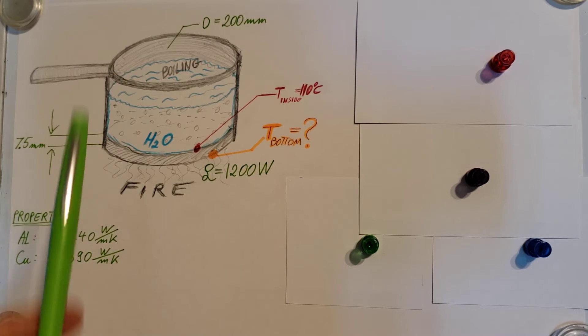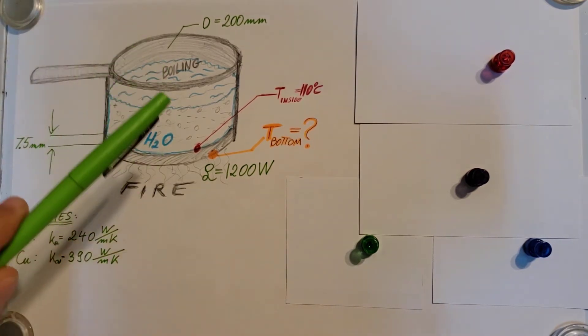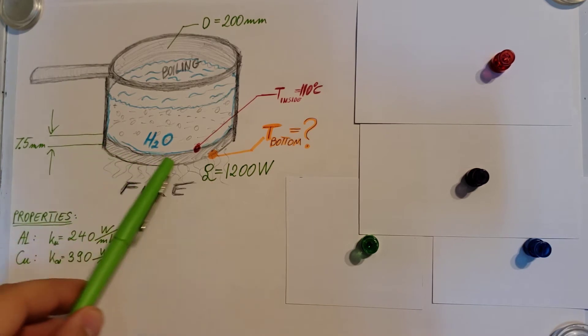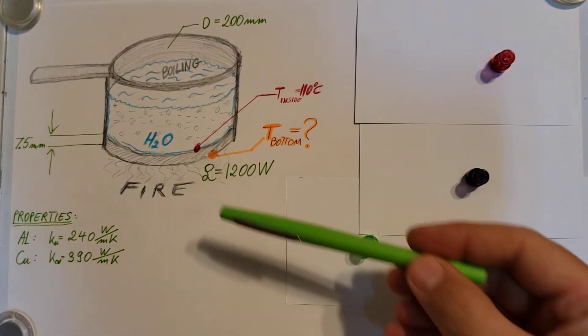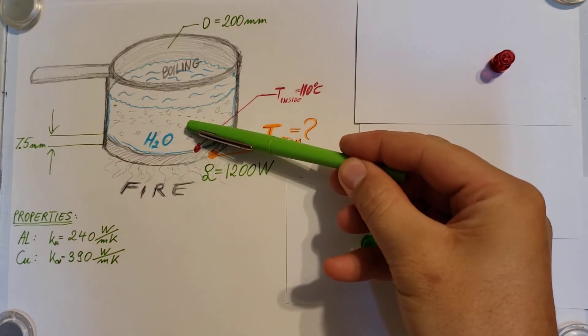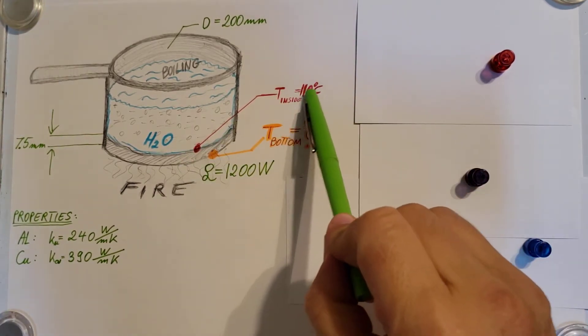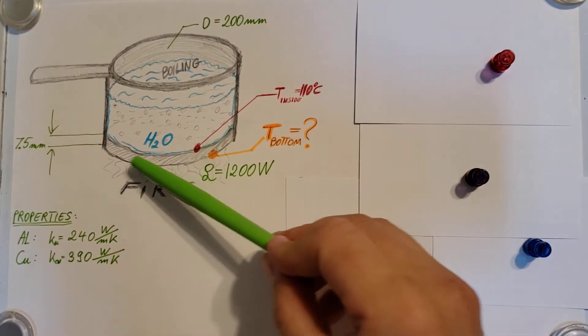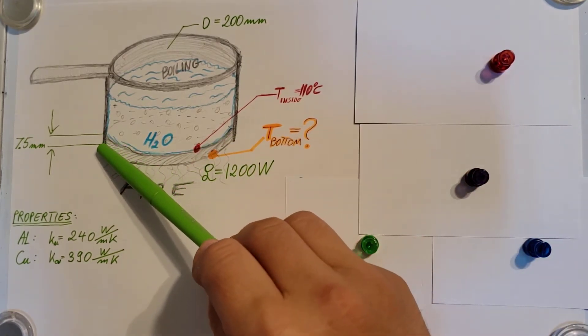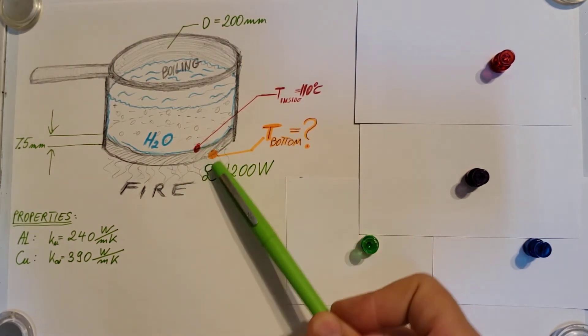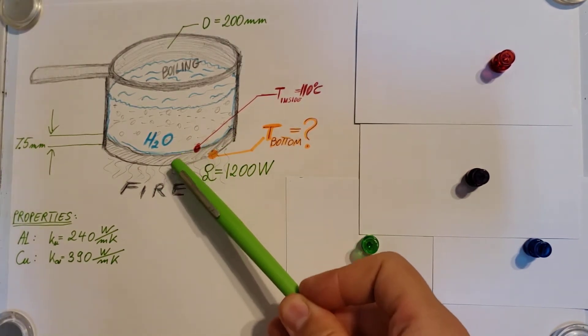We also know that the water is boiling and the temperature on the surface of the bottom of the pan, on the inside part that's in contact with the water, is at 110 degrees Celsius. They want us to find the temperature of the bottom of the pan on the outside, the part that is in contact with the stove or the fire.